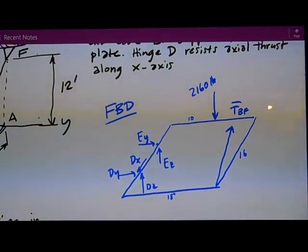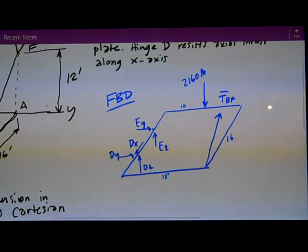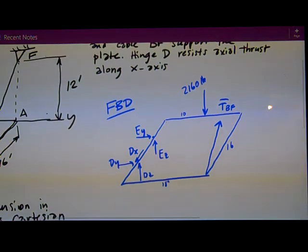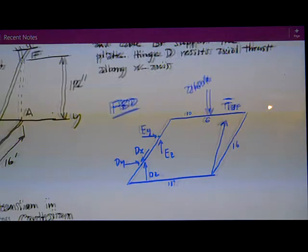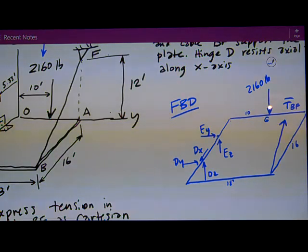Now normally I would get everything in Cartesian form, and the only thing really, I need to get the coordinates of some of these points. I'm only going to get the ones I really need. And I'm going to call this point here where the 2160 is at point G, just to give it a name, because I'm going to be referring to it here in a minute.